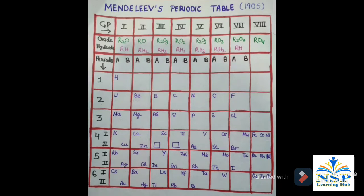There are six periods. The periods four, five, six are divided into two series, first and second.